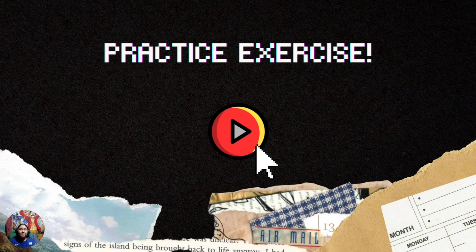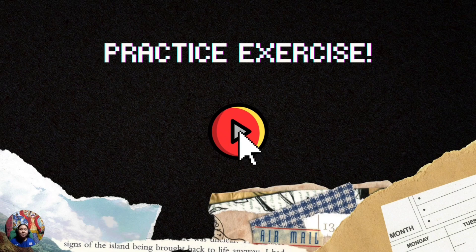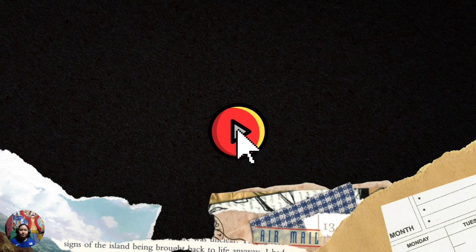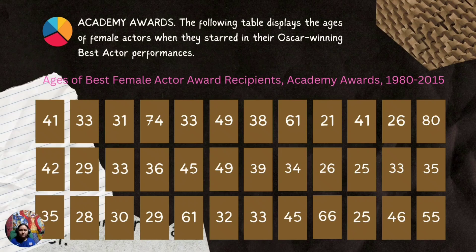Now, to practice ourselves, let us do some exercises. This table displays the ages of female actors when they starred in their Oscar-winning Best Actor performances. This table represents ages of Best Female Actor Award Recipients, Academy Awards 1980 to 2015.